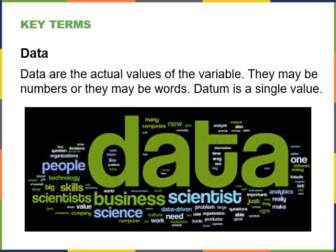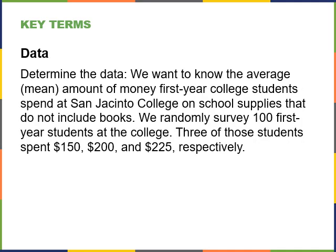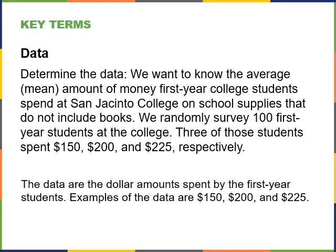Data are the actual values of the variable. They may be numbers, words, or a mix of both. The word 'datum' refers to a single value, while 'data' refers to more than one value. In our example, the data are the dollar amounts spent by the first-year students — examples include $150, $200, and $225.